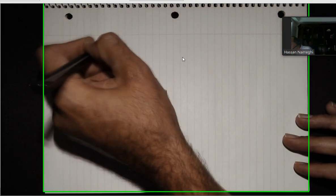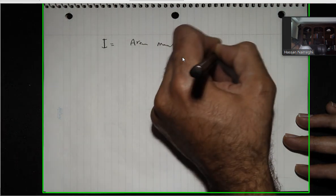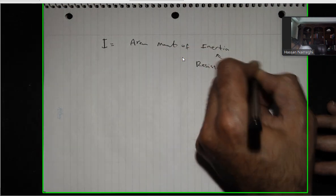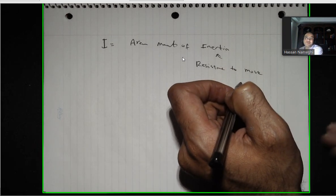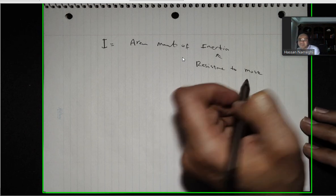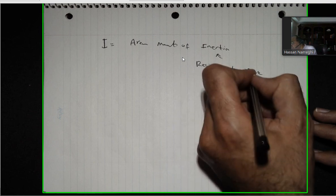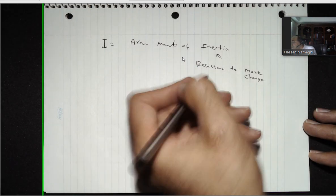The lecture is about moment of inertia — area moment of inertia — shown with the symbol I. The definition of inertia means resistance to move, or reluctance to change, or tendency to remain unchanged. So resistance to move — we call it in physics. Resistance to change, that's the meaning of inertia. Now, area moment of inertia means the resistance to bending.